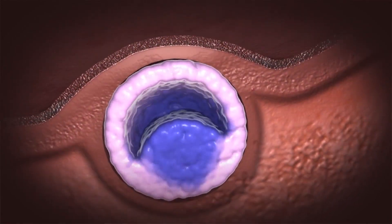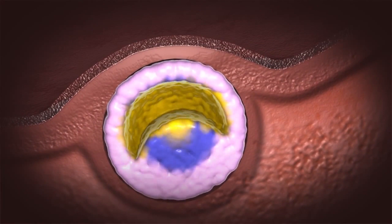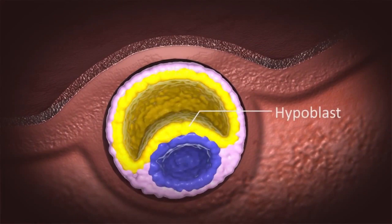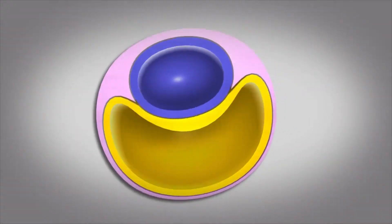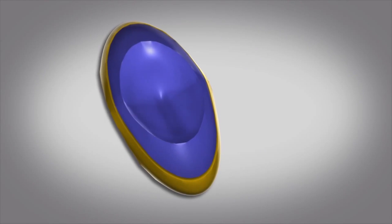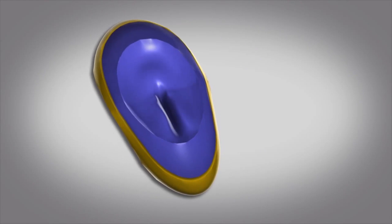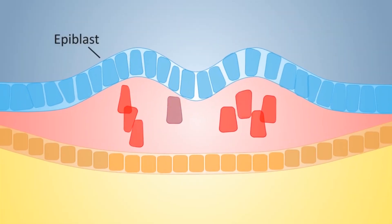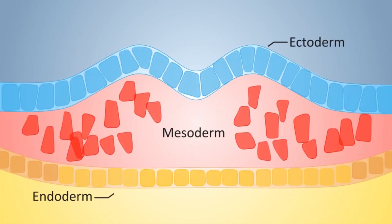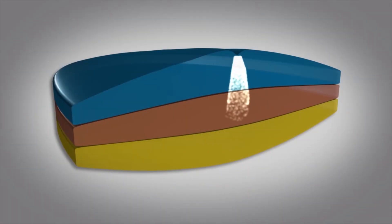At the second week, the embryoblast, which is the blastocyst, shows the hypoblast and the epiblast. Up to the third week, the epiblast shows a streak of cells which differentiates and migrates to form the three germ layers, i.e. the ectoderm, the mesoderm and the endoderm. In the fourth week, the ectoderm forms the notochord.